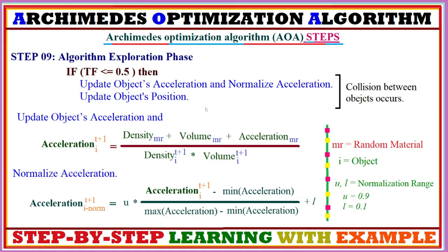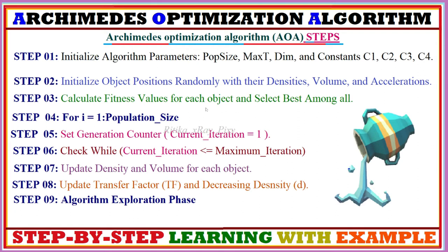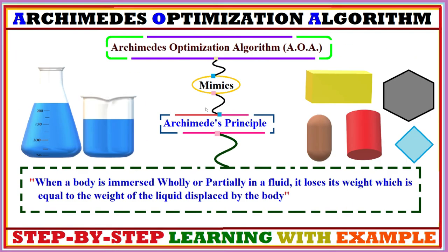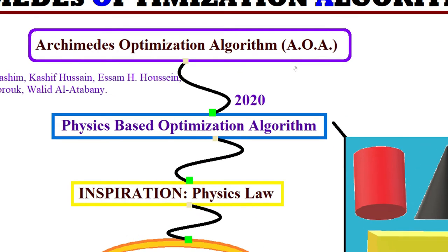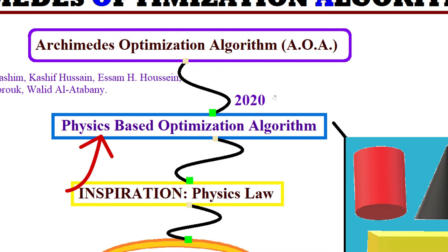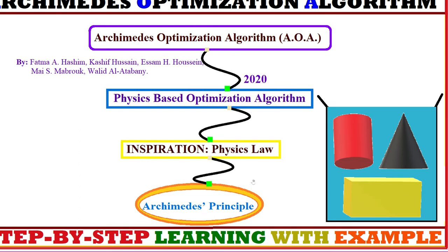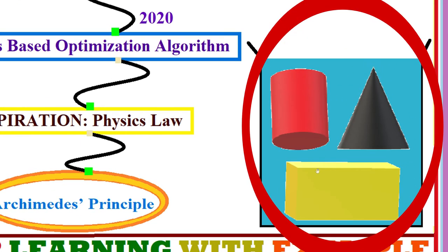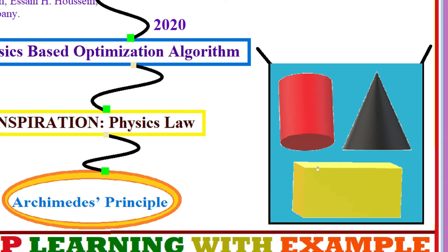We will cover the mathematical models to update agent positions in the search space and how we can perform exploration and exploitation phases. The Archimedes Optimization Algorithm was introduced in 2020 as a recently proposed physics-based meta-heuristic optimization algorithm, basically inspired by the physics law named Archimedes' principle.